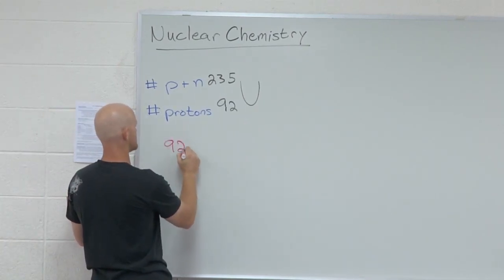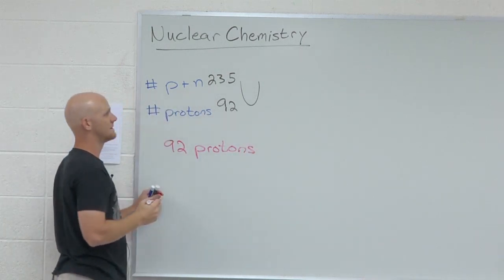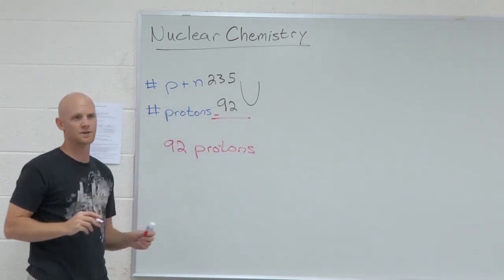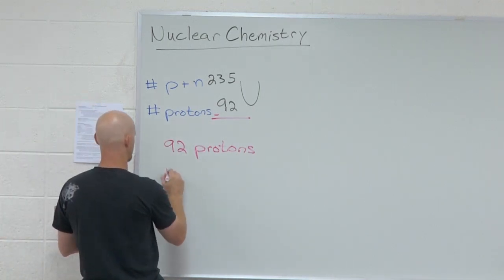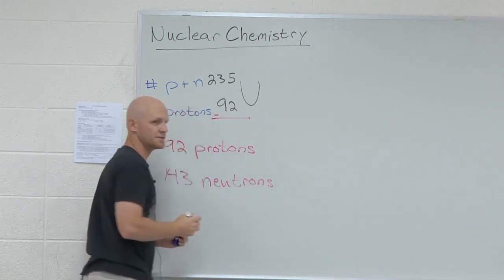Cool, so 92 protons, and then protons plus neutrons minus protons will give you 143 neutrons.